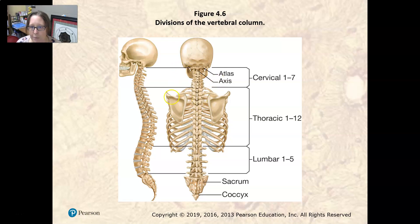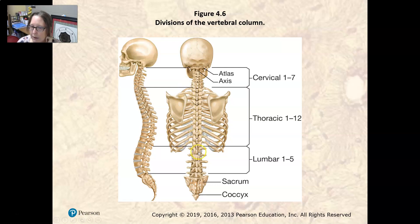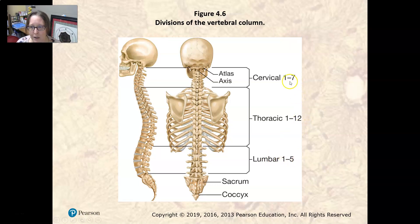C1 through C7 are the cervical vertebrae. Then you have 12 thoracic vertebrae — T1 through T12 — each attached to one of the 12 pairs of ribs. Then five lumbar vertebrae, followed by the sacrum and coccyx. A memory trick: 7 plus 5 equals 12, so you have seven cervical, then 12 thoracic, then five lumbar.